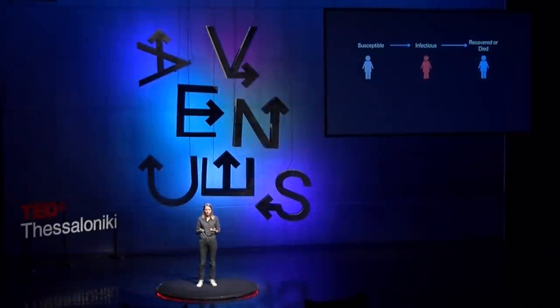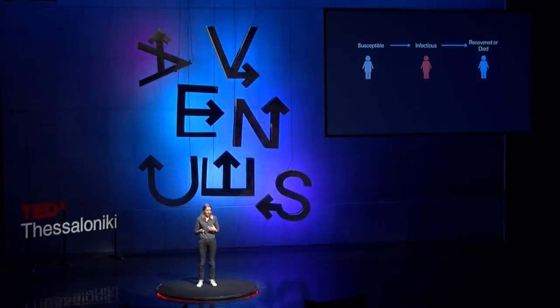To model something like flu, the first thing we do is divide the population into three disease groups: susceptible people who are able to get infected, infectious people who have the infection and are spreading it, and the recovered or died group in blue. We assume that when people recover they're protected, but if it's severe they may have died. Everyone in the population must be in one of these groups, and we determine the rates of transition between each group — the rate of transmission when infected, and the rate of recovery.